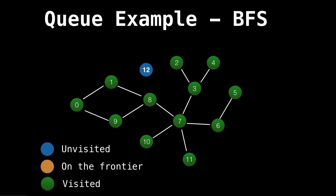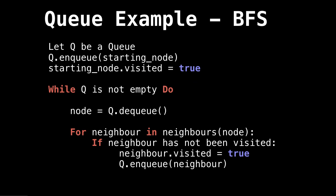So suppose we wanted to actually code a breadth-first search, how would that be done? Well, the idea is to use a queue. So first, we add the starting node to our queue. And then we mark the starting node as visited.